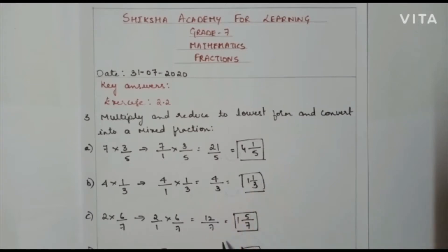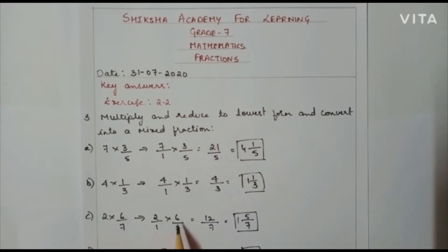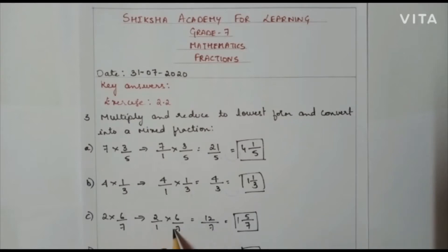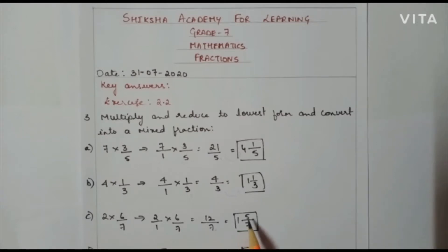The next problem: 2 × 6/7, that is 2/1 × 6/7. Here also I can't cancel. So 2 × 6 = 12, and 1 × 7 = 7. So 12/7 is the answer. If I convert to a mixed fraction I will get 1 and 5/7.